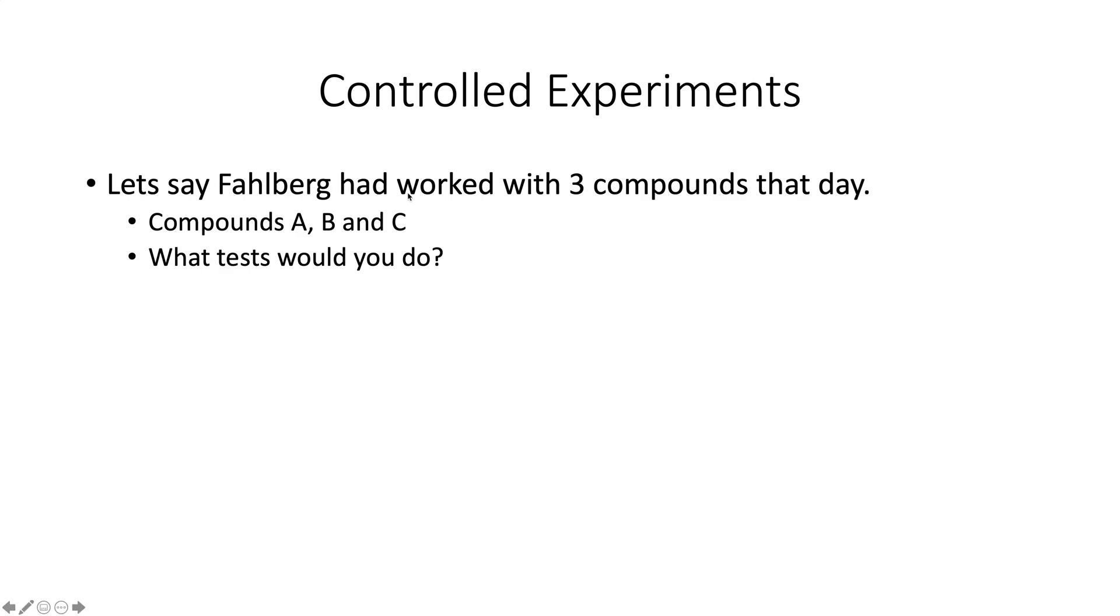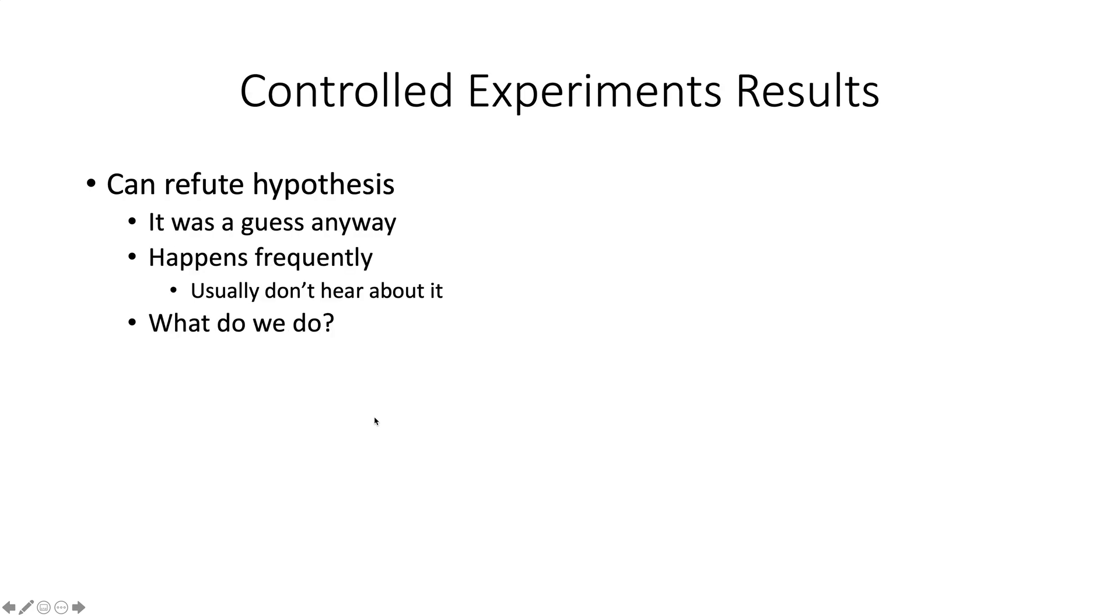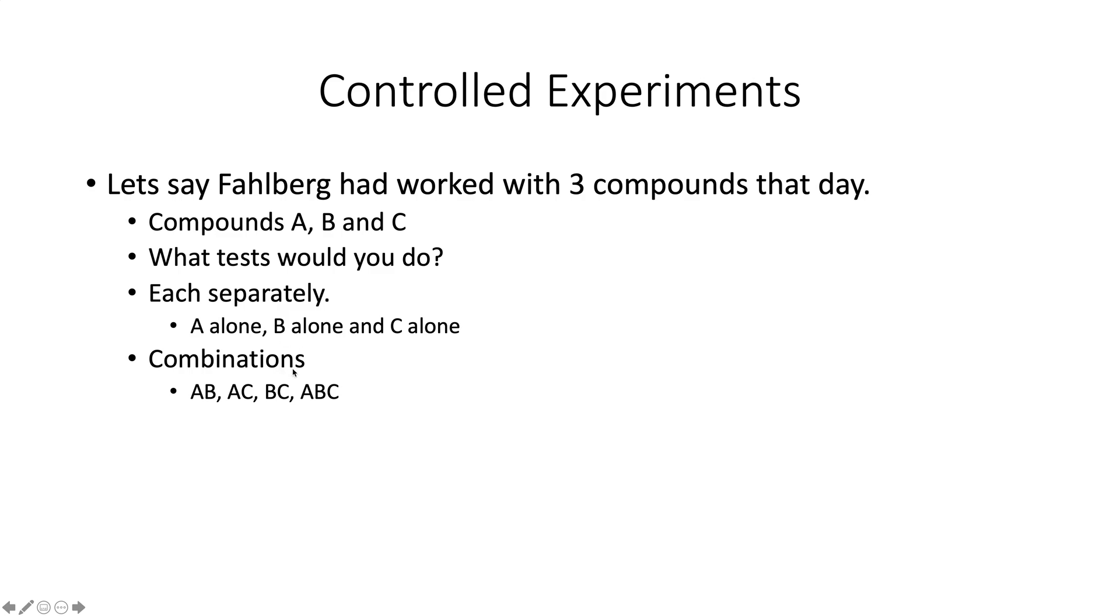Let's use the example of the Falberg thing. Let's say Falberg had worked with three compounds that day, and we'll just call them A, B, and C. Think about what tests might you do to find out what made his hands sweet. So hit pause, see if you can come up with something. Welcome back from pause. Let's see how you did. And yeah, you would test each one separately. A alone, B alone, C alone. And then maybe you would test mixtures, right? A-B, A-C. Maybe it wasn't any of them. Maybe it's only when they're mixed together. And there's one more. You might just kind of look and see if it was something else. Maybe it was something that happened when you got home.